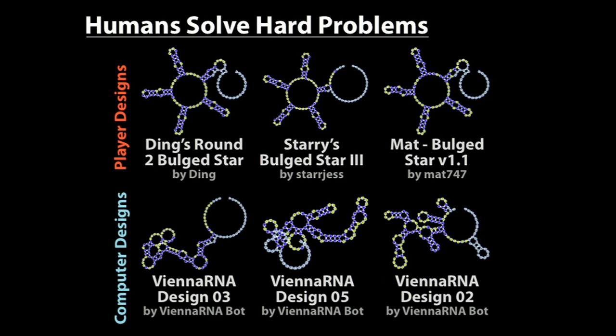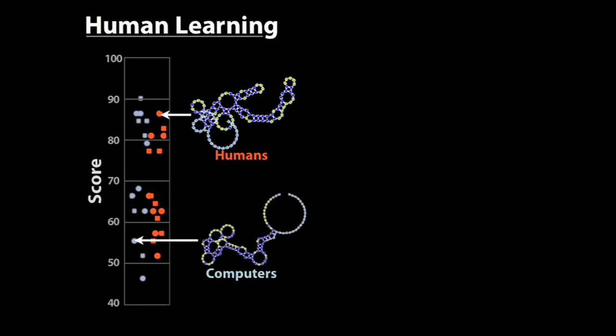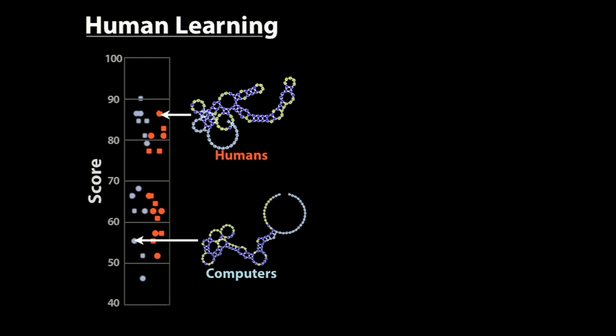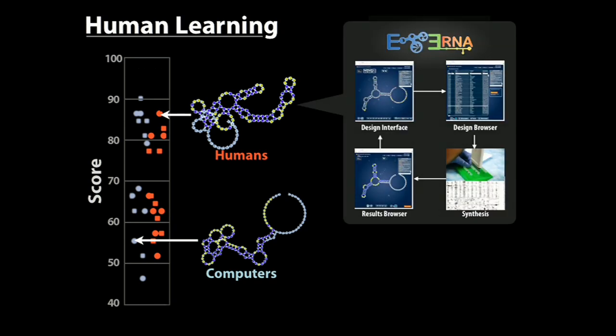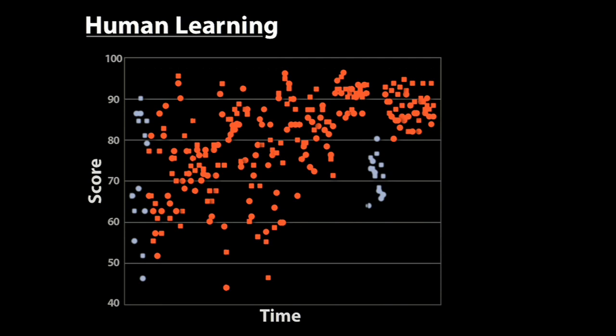When we started this experiment, the humans — shown as the red dots — did about as well as the computer, and they were really all over the map. Higher is better, lower is worse. But through this cycle of experiment, hypothesis, result, the players learned rules of RNA folding which no computer programs know. And six months into the experiment, the worst player design was better than the best computer design.